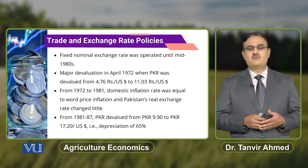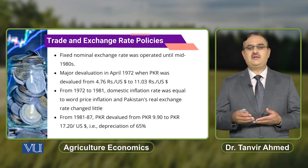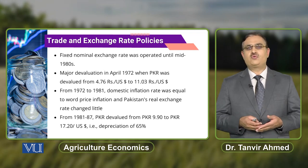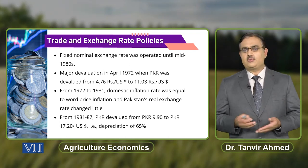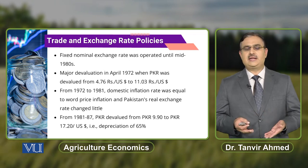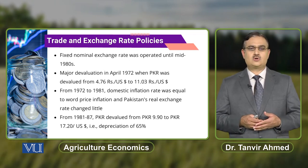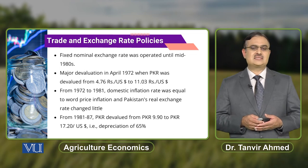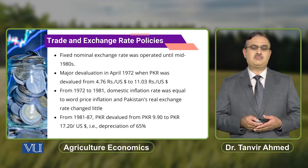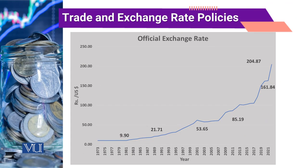From 1981 to 1987, the Pakistani rupee devalued from PKR 9.90 to 17.20 per US dollar — a depreciation of 65%. This diagram shows the official exchange rate from 1973 to 2021.